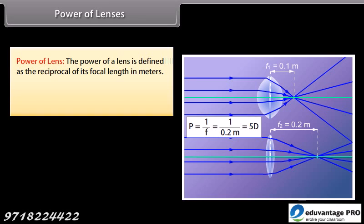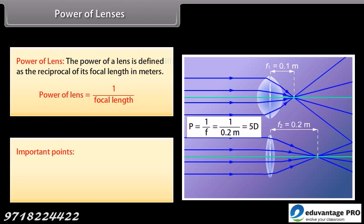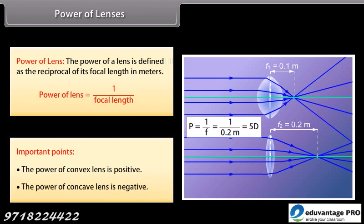The power of a lens is defined as the reciprocal of its focal length in meters: Power = 1/F. Important points: the power of a convex lens is positive, and the power of a concave lens is negative.